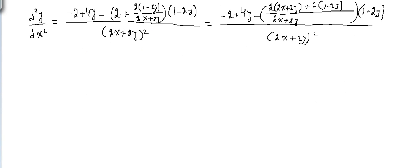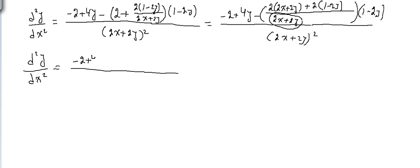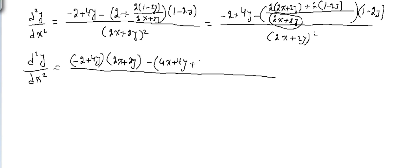Again, d²y/dx² is equal to — let's take this as a common factor between these terms. So (minus 2 + 4y) should multiply with (2x + 2y), giving minus (4x + 4y) plus (2 - 4y), multiplied with (1 - 2y). And when we multiply (2x + 2y) into the denominator, it becomes (2x + 2y) to the power 3.